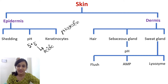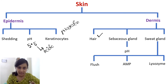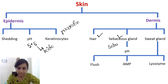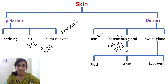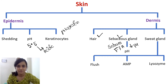The dermis contains hair, which captures bacteria and inhibits their entry into our body. Sebaceous glands produce sebum, which is an oily secretion. Sebum contains free fatty acids (FFA), and these free fatty acids reduce the pH, which inhibits the growth of some bacteria.